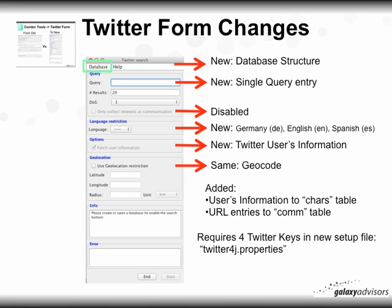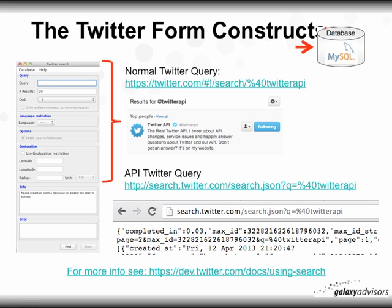Reviewing the form: under the database, you'll have to create a new database for your tweets even if you had an older one — it can no longer be used for adding new data. The new query is a single query entry only. The 'only collect retweets as communication' option is disabled. Language is new — clicking the drop-down shows German (DE), English (EN), or Spanish (ES). Fetch user information is permanently enabled, and we've added user info to the charge table and URL entries to the comm table.